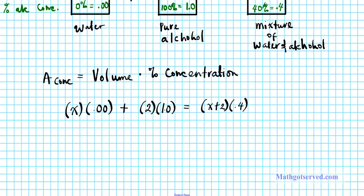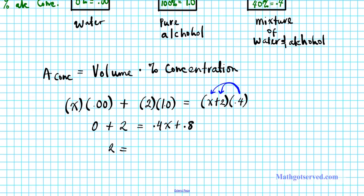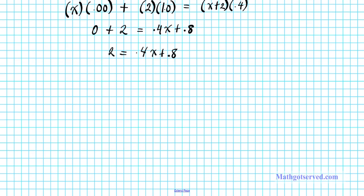Let's go ahead and solve this equation. Multiplying x by 0.00 gives 0, so we have 0 plus 2 equals (x + 2)(0.4). Distributing 0.4 to both terms in the parenthesis, we get 0 + 2 = 0.4x + 0.8.